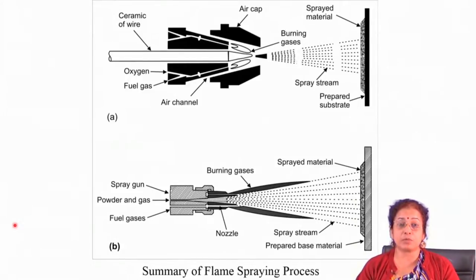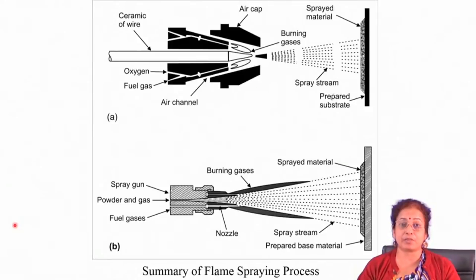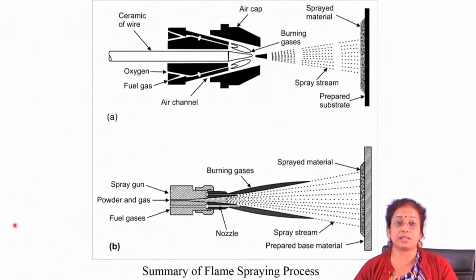Among all these processes, flame spraying is the most primitive in nature and also quite cheap. In the flame spray deposition process, oxyacetylene flame is used as a source of heat. This technique can use the precursor material in the form of a rod, powder, or wire.